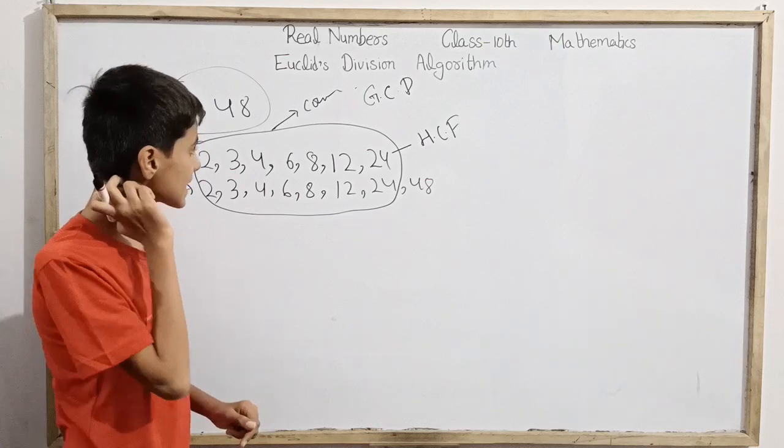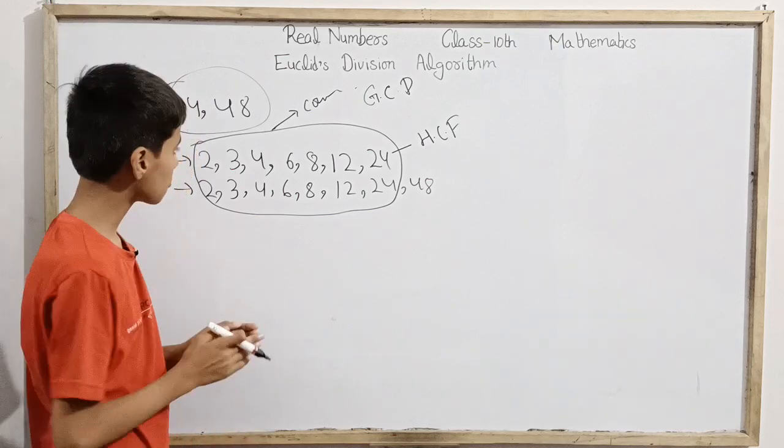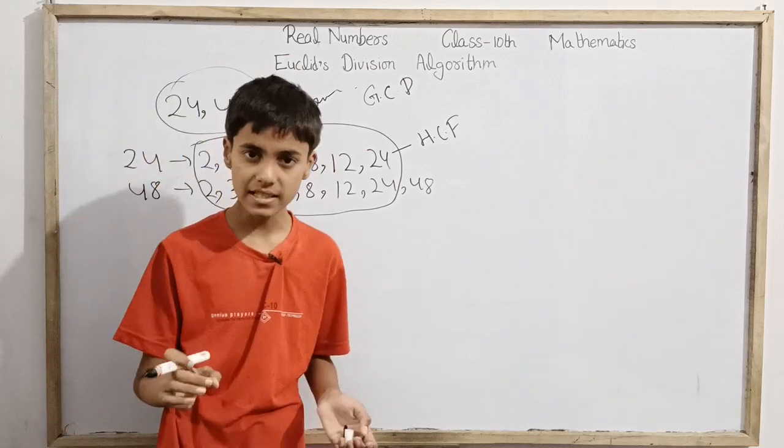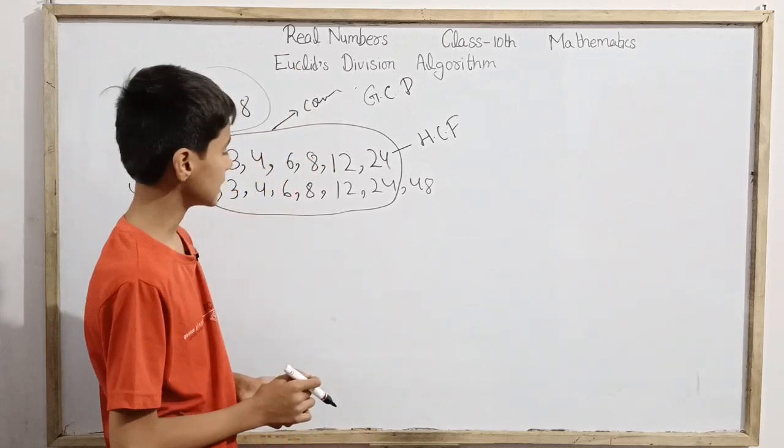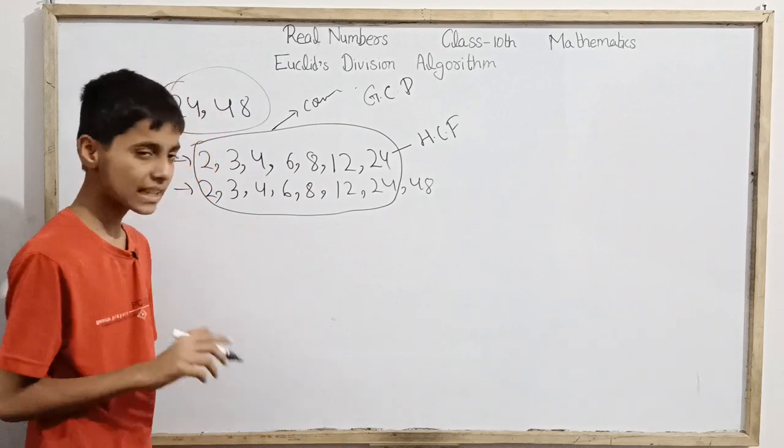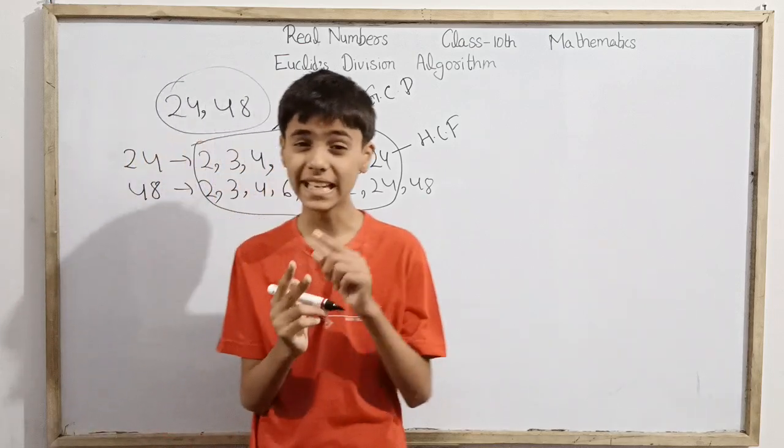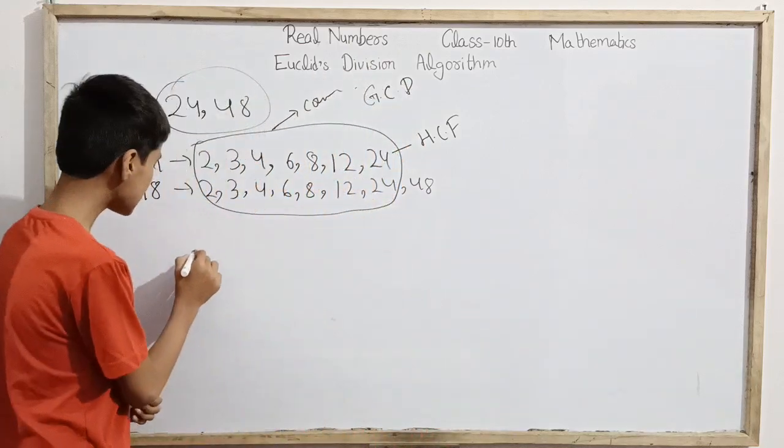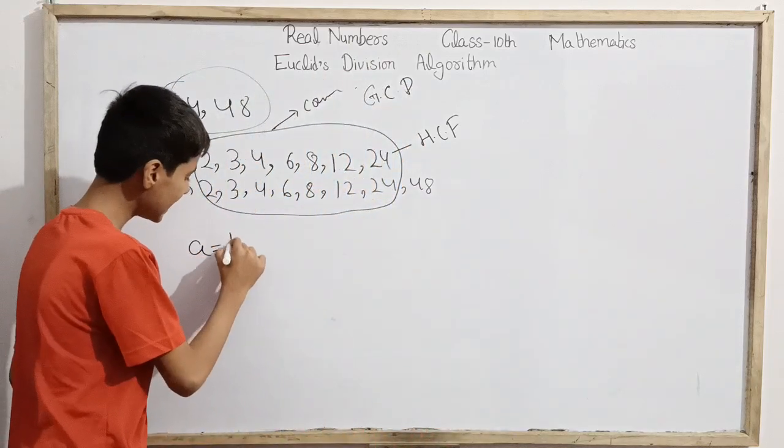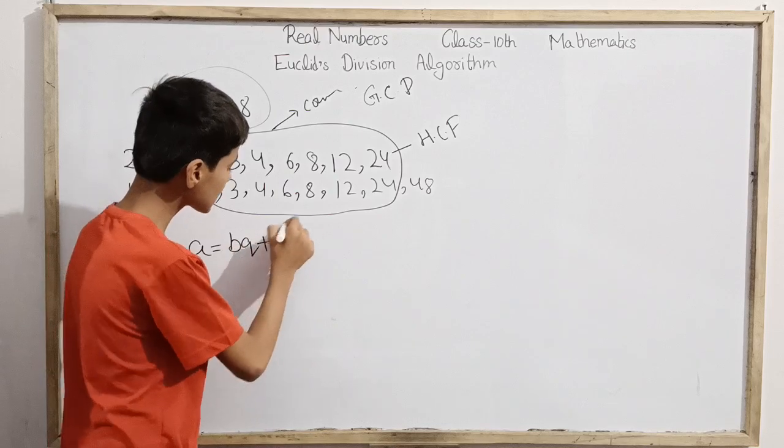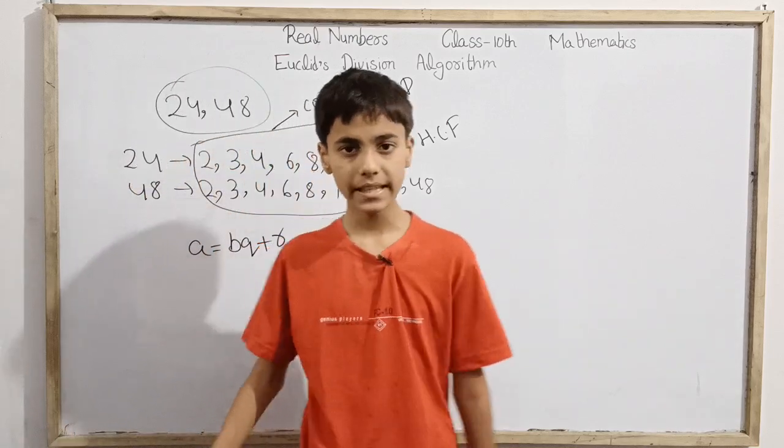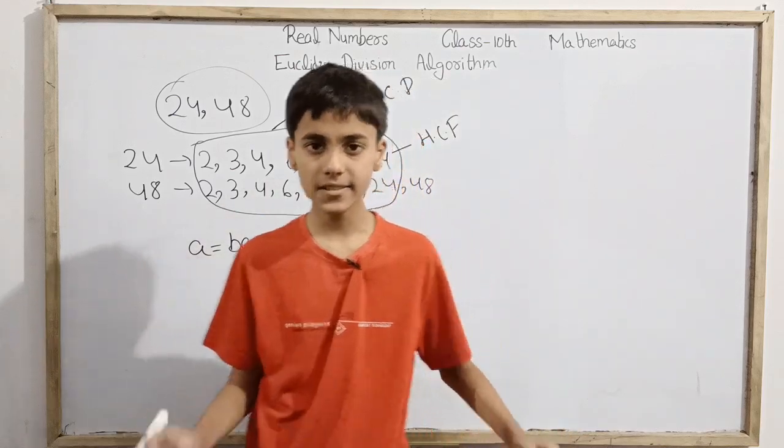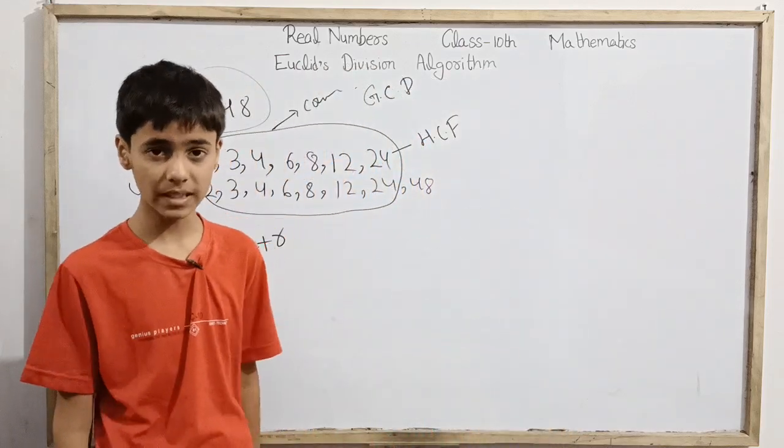Now we will learn a theorem before continuing our study on Euclid's Division Algorithm. The theorem is: if we have two integers a and b, such that a can be expressed as bq + r, where a is divided by b, we get q as quotient and r as remainder.